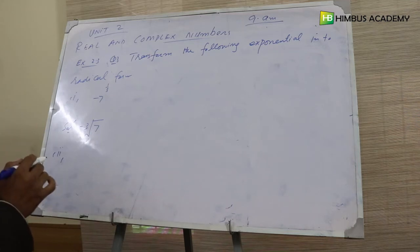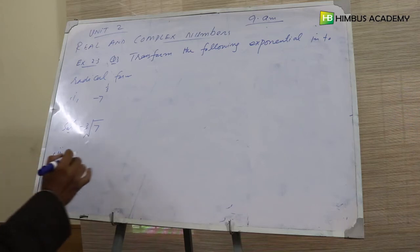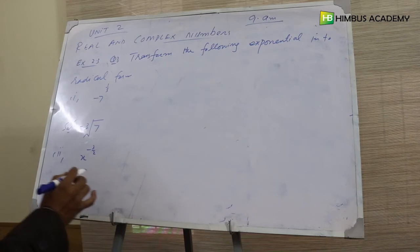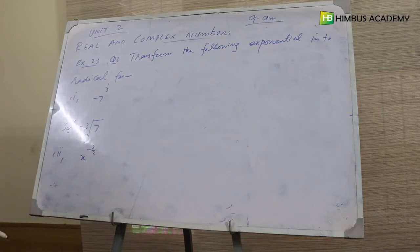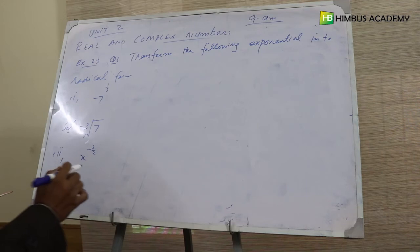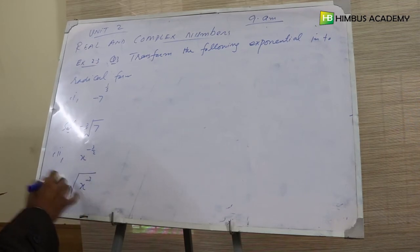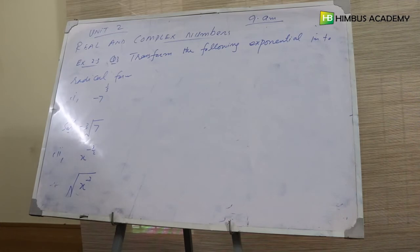Number second: x power minus three over two. This can be written as one over square root of x power three.